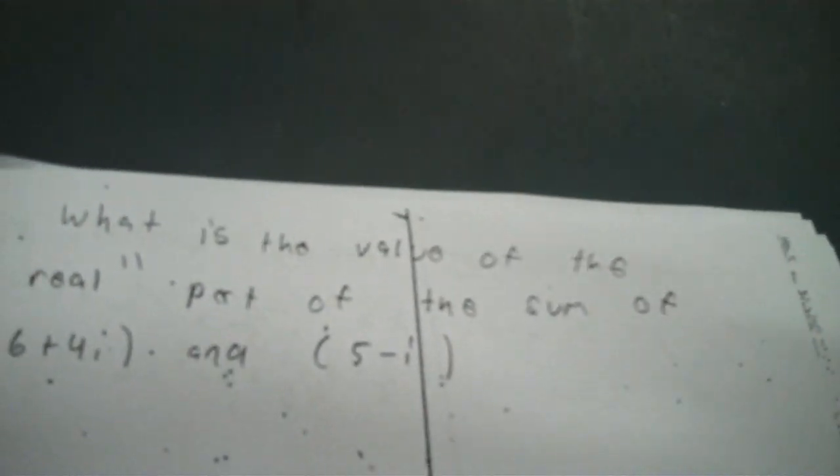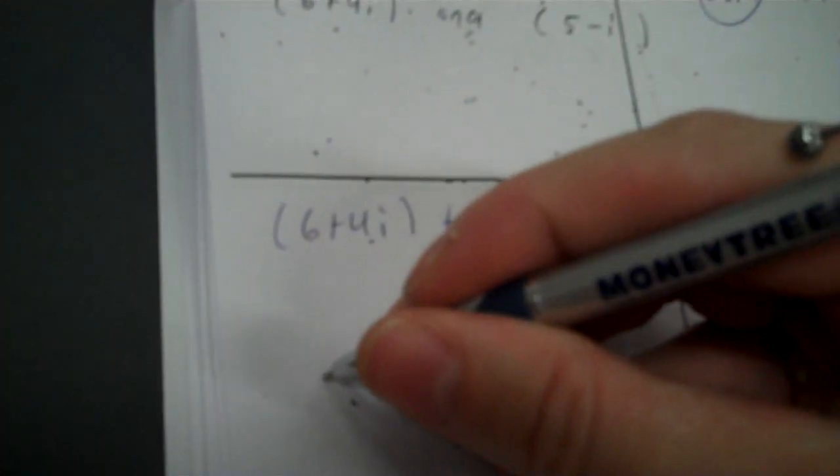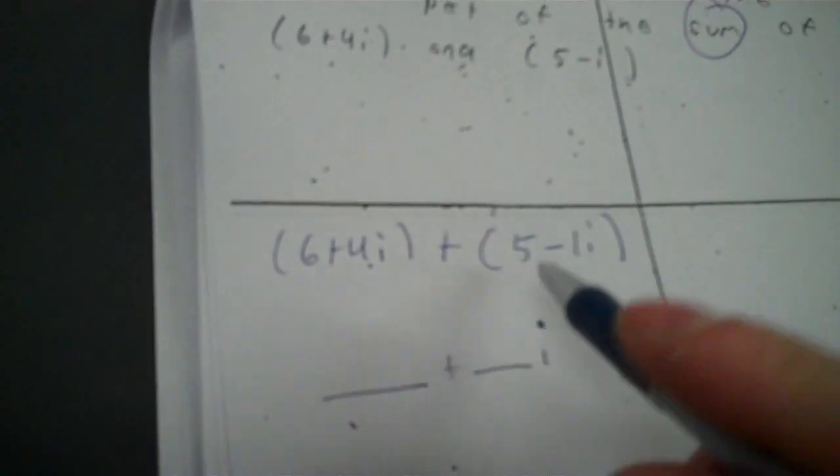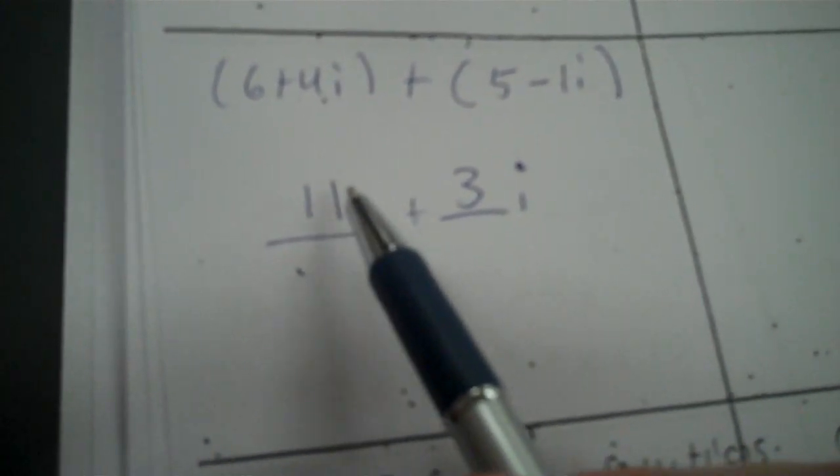Number 11: what is the value of the real part of the sum of 6 plus 4i and 5 minus i? Sum means addition. I'm going to put a 1 in front of the i. 6 plus 5 is 11. 4 plus negative 1 is 3. The 3i is the complex part; the real part is the one without the i. So 11 would be the answer. The value of the real part means you add just the real parts — complex means it has i, real means it does not.